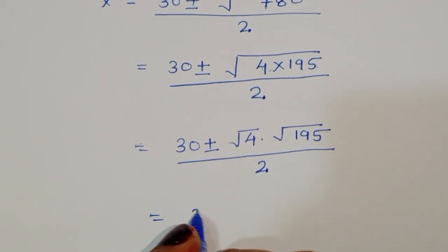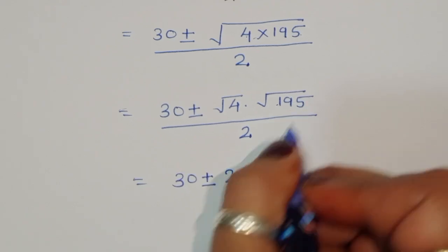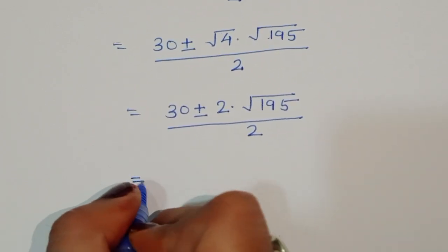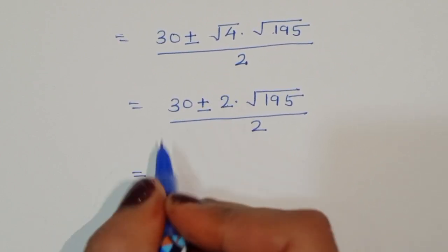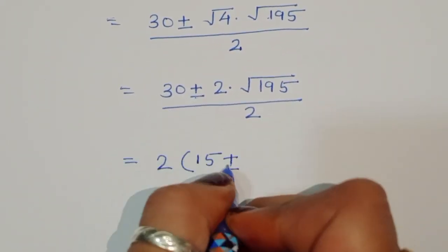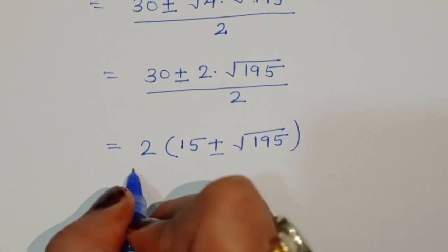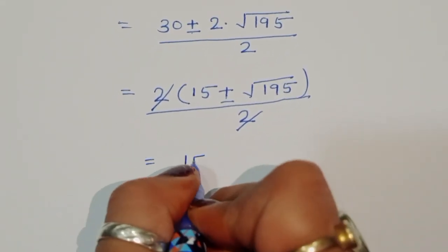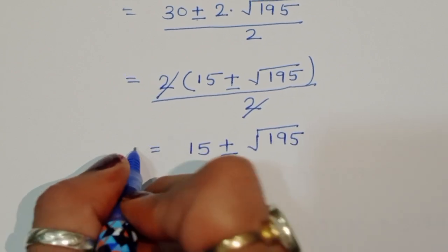Now, square root of 4 is 2, so we have 30 plus or minus 2 times square root of 195, divided by 2. We can take 2 as a common factor: 2 times (15 plus or minus square root of 195), divided by 2. The 2 cancels, giving x equals 15 plus or minus square root of 195.